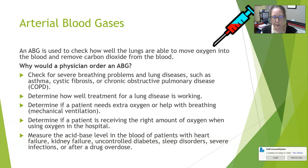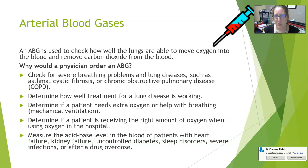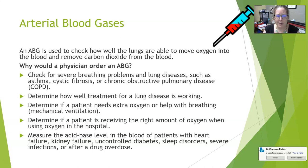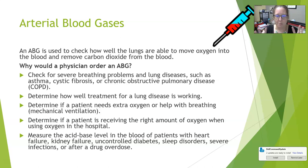ABGs are also done to determine if a patient is receiving the right amount of oxygen when using supplemental oxygen. Pulse oximetry on a patient's finger is less invasive but only measures oxygen — it doesn't capture CO2 or pH. ABGs also measure the acid-base level in the blood of patients with heart failure, kidney failure, uncontrolled diabetes, sleep disorders, severe infections, or after a drug overdose — most of which are metabolic diseases affecting pH.